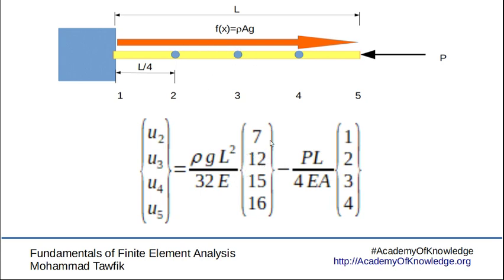We can again check that the middle point, which is u3 here, has the exact value we can get from the mechanics of material or the same value we got using only two elements. But now we have more information about the inside points here, two and four, which was not present in the previous part of the example. Again, if you use this into the auxiliary equation, you will get the reaction force exactly as the mechanics of material method.